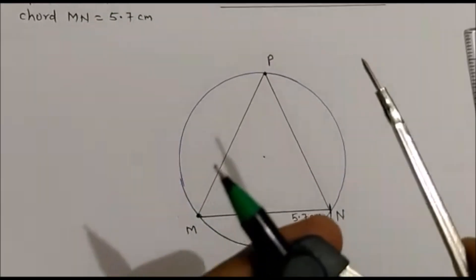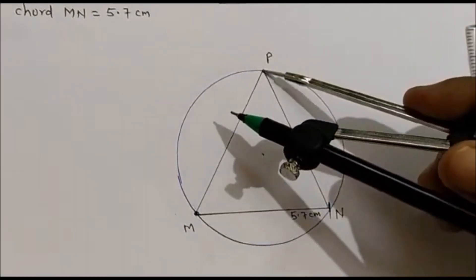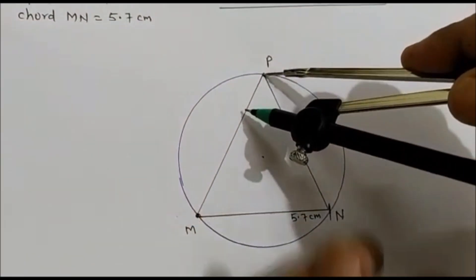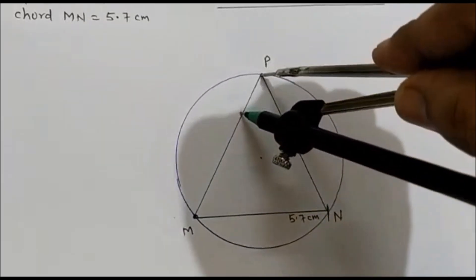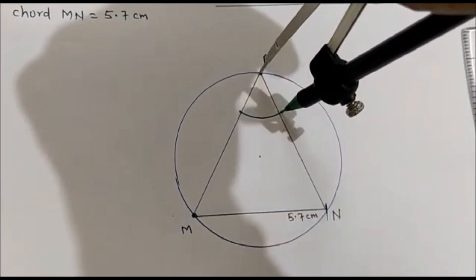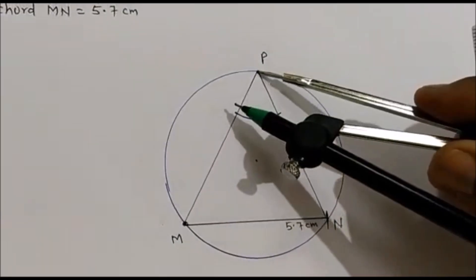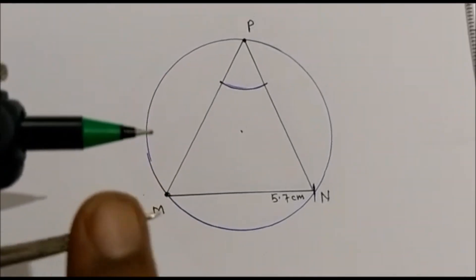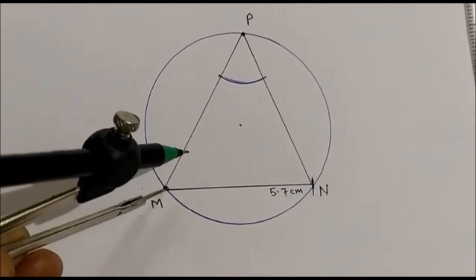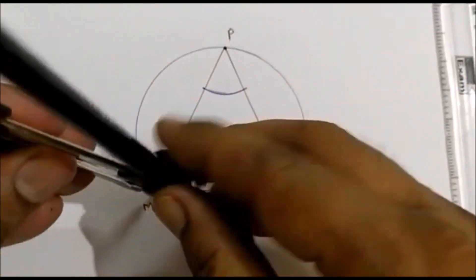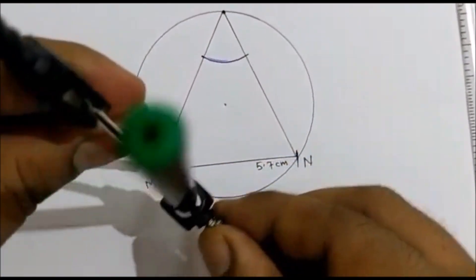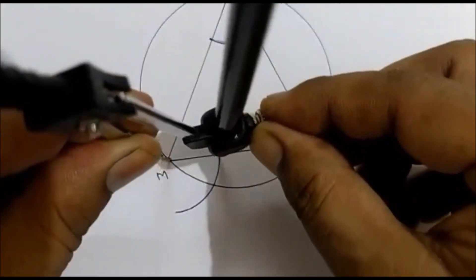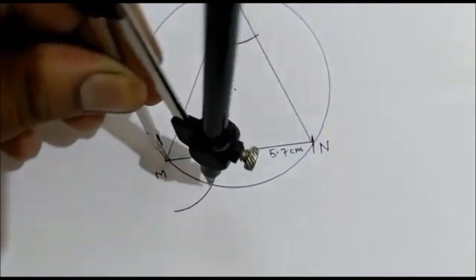To draw the tangent at point M, take the compass, keep it on point P and draw a small arc. I repeat: keep on point P and draw an arc. Now don't change the distance — with the same distance, keep on point M and draw an arc from this line. You can draw the arc this way.